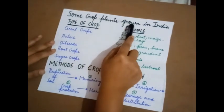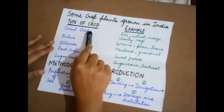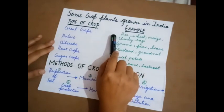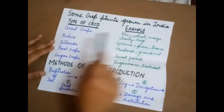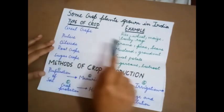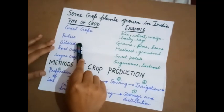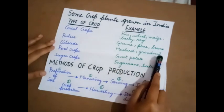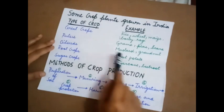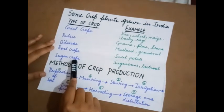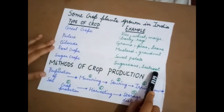Some crop plants grown in India, by type: Cereal crops are rich in carbohydrates — examples are rice, wheat, maize, barley, and ragi. Pulses are a rich source of proteins — examples include grams, peas, and beans. Oil seeds are a rich source of fat — examples are mustard and groundnut. Root crops are a rich source of starch — for example, sweet potato. Sugar crops include sugarcane and beetroot.